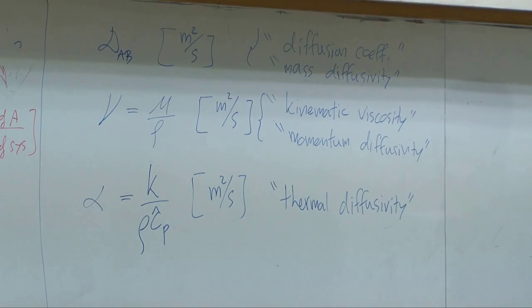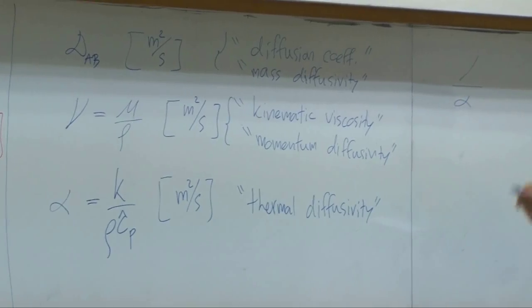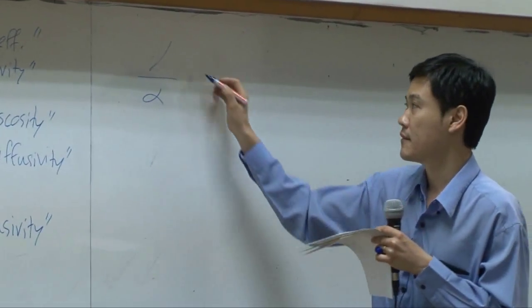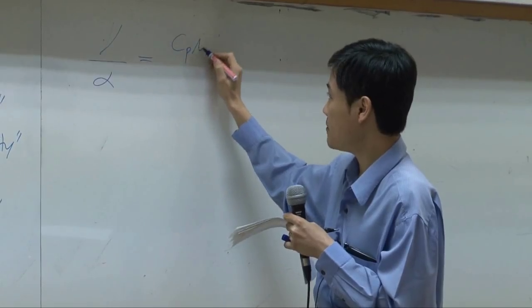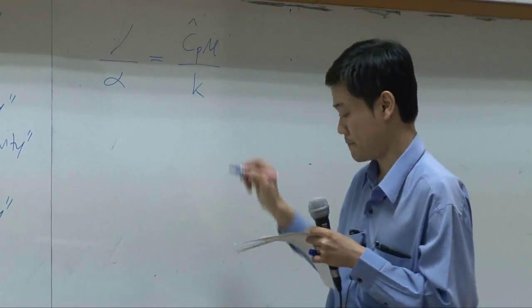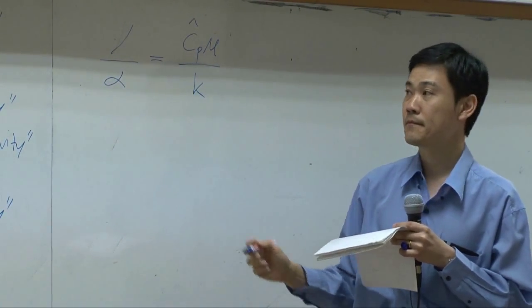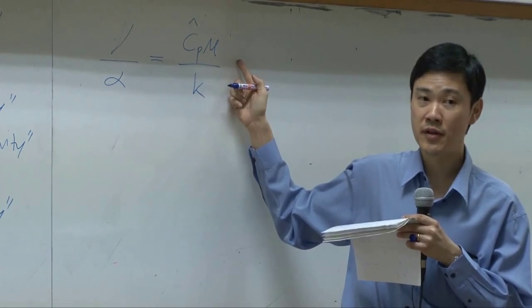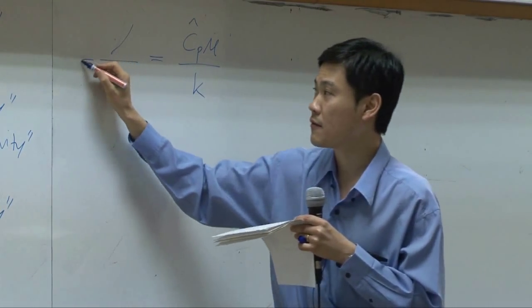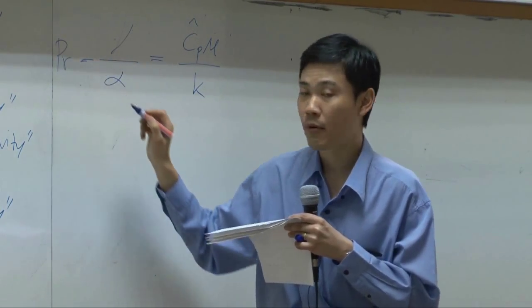We have learned from energy part that if you take nu or kinematic viscosity divided by thermal diffusivity, that becomes Cp mu over K. It has no unit. This is called Prandtl number.